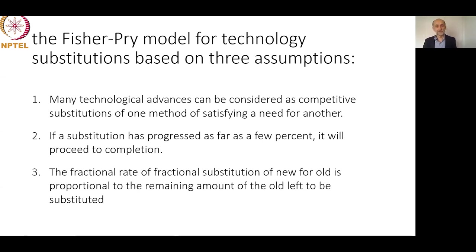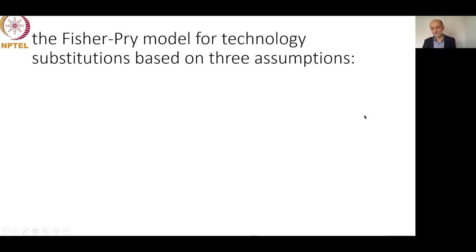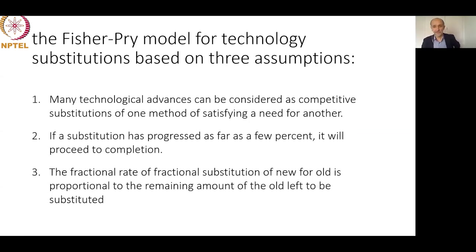Third, the fractional rate of substitution of new for old is proportional to the remaining amount of the old left to be substituted. This explains the curved path. The vertical axis represents 100% of the market as a ratio — not the absolute number of people listening to music. This is why the fractional substitution rate is always proportional to the remaining old left.